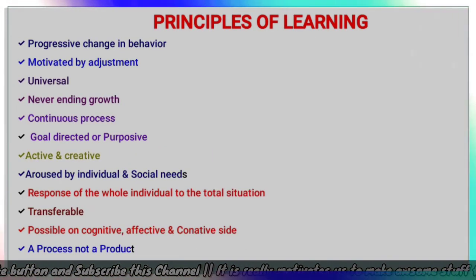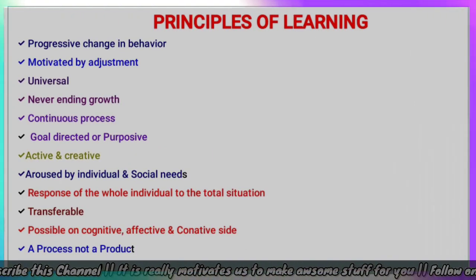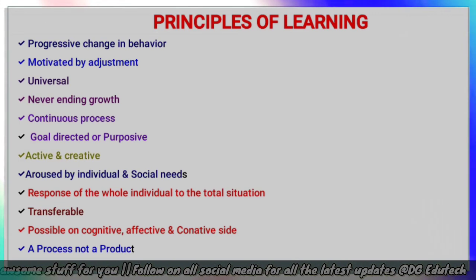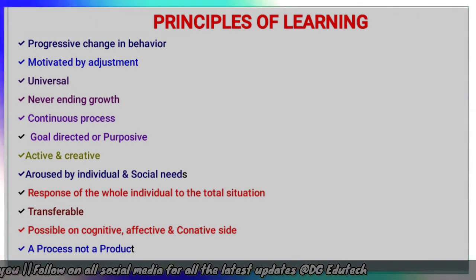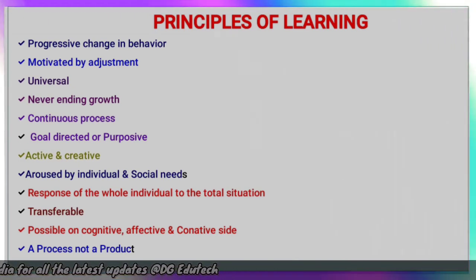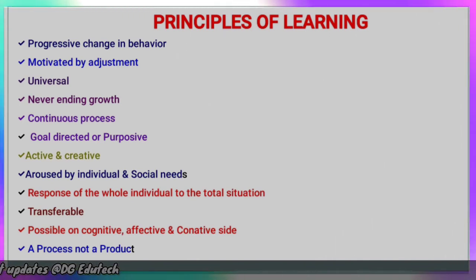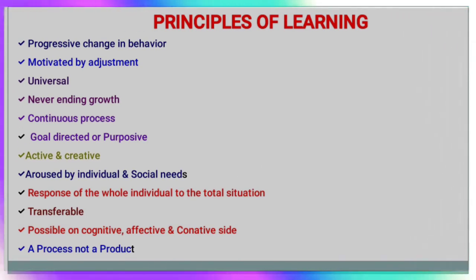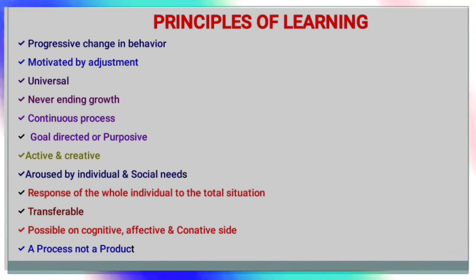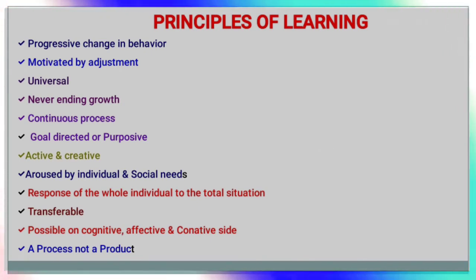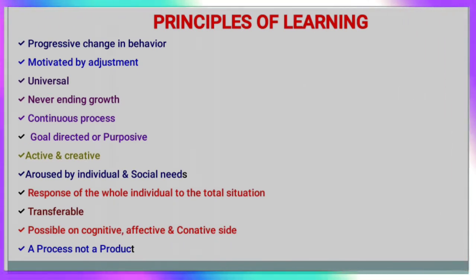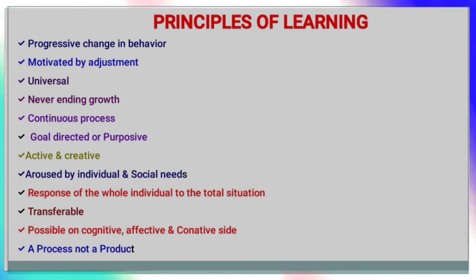Next are the principles of learning. The first is progressive change in behavior. Learning is also the net result of motivation by adjustment. It is universal, a never-ending growth, and a continuous process. Learning is always goal-directed and purposive, active and creative, aroused by individual and social needs, and is a response of the whole individual to the total situation. Learning is always transferable, possible on cognitive and affective sides, and is a process, not a product.